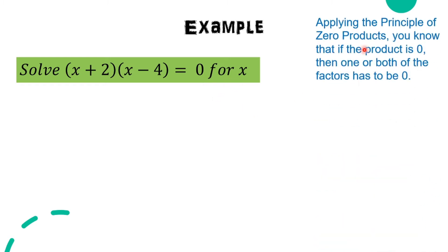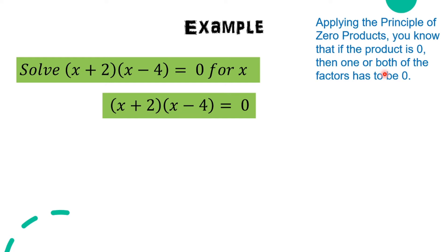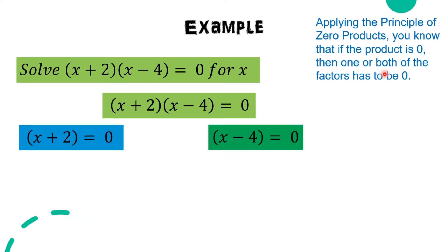Applying the principle of zero products, we know that if the product is zero, then one or both of the factors has to be zero. So we have (x + 2)(x - 4) = 0, and we separate the two factors: x + 2 = 0 and x - 4 = 0.